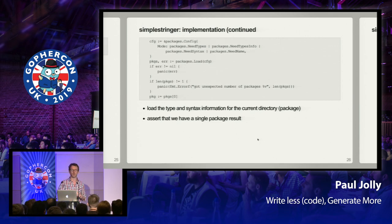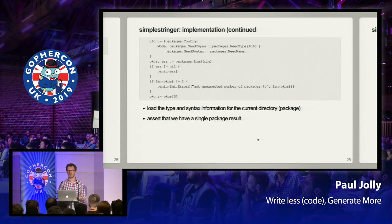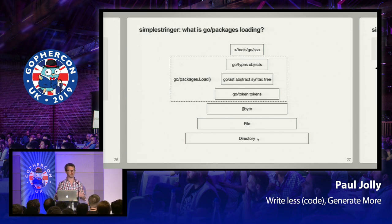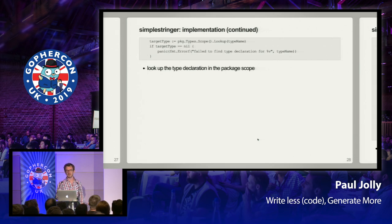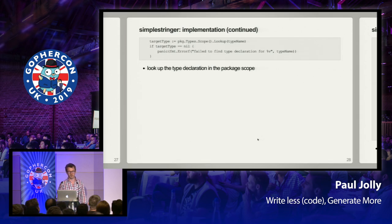We're going to need to look at the structure of the code — the abstract syntax tree — and also the types of expressions within that code. This is the source where we've declared our type pill. Here we're actually loading that syntax and type information using go/packages. Go/packages gives us back the abstract syntax tree representation and allows us to query types within that syntax tree. We then look in the package scope for the type that has been provided as input.